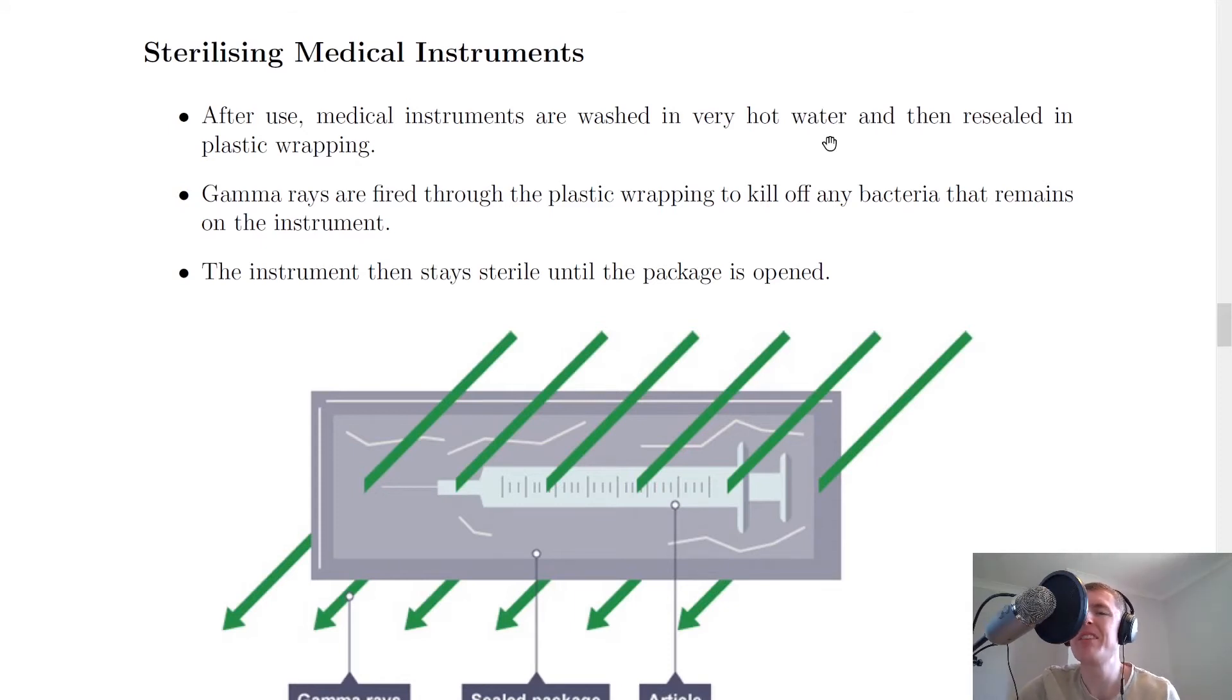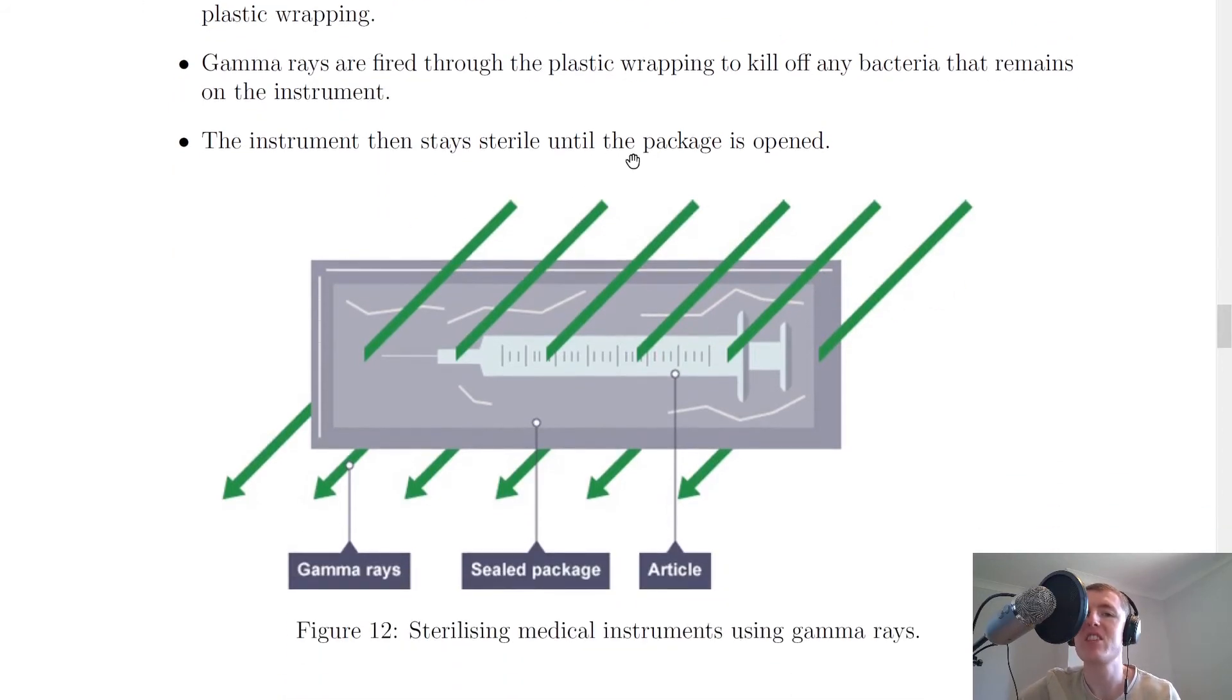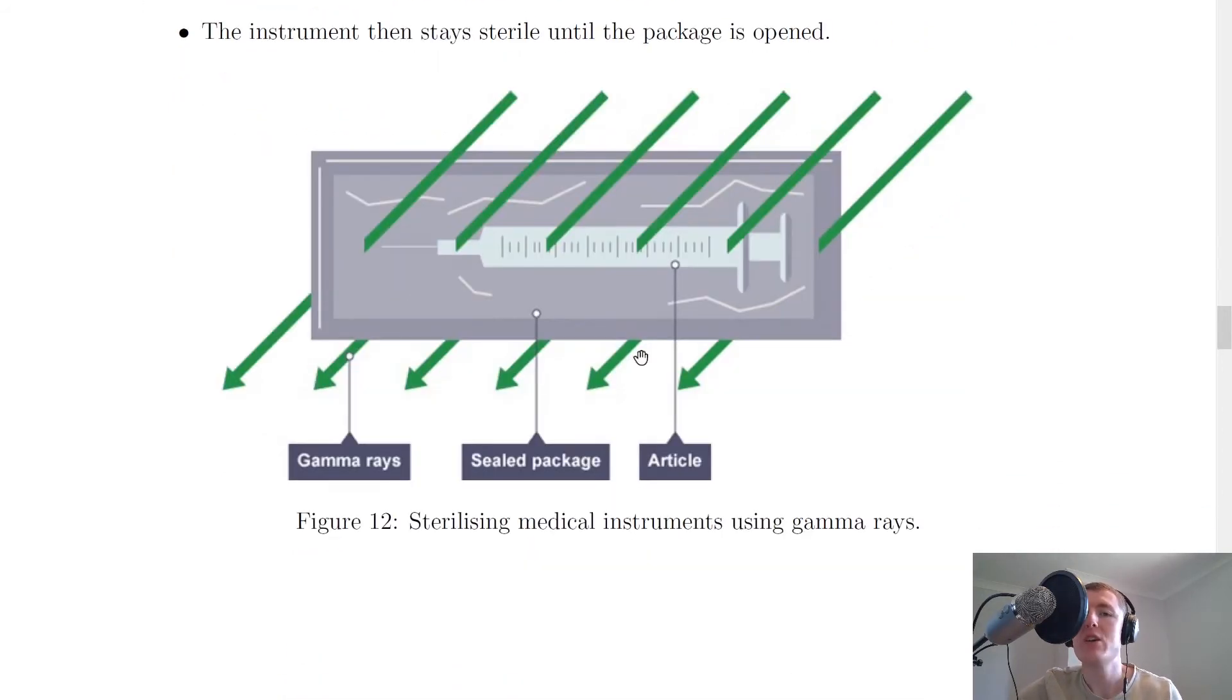If the instruments are used on one person's body and then need to be used on someone else's body, you want them to be as clean as possible so that you're minimizing the risk of transferring bacteria and diseases to patients. Gamma rays are fired through the plastic wrapping to kill off any bacteria that remains on the instrument. The instrument then stays sterile until the package is opened. Here's our plastic wrapping and the syringe inside, and we fire gamma rays through it to kill off any remaining bacteria.